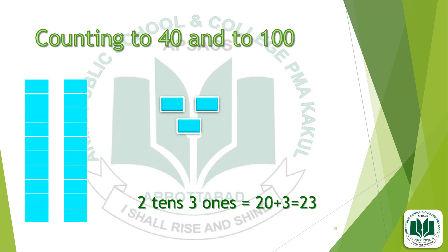Counting to 40 and to 100 — I explain this topic with some examples. Here is a group of 10, and there are 2 groups of 10, so it becomes 20. And here are 1's — 1, 2, and 3. There are 2 tens and 3 ones. So the number becomes 20 plus 3, which equals 23.